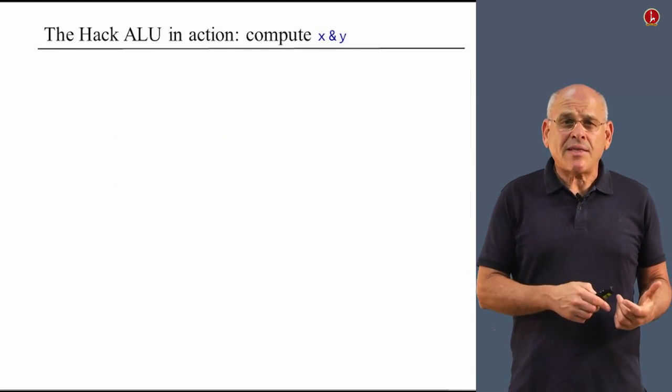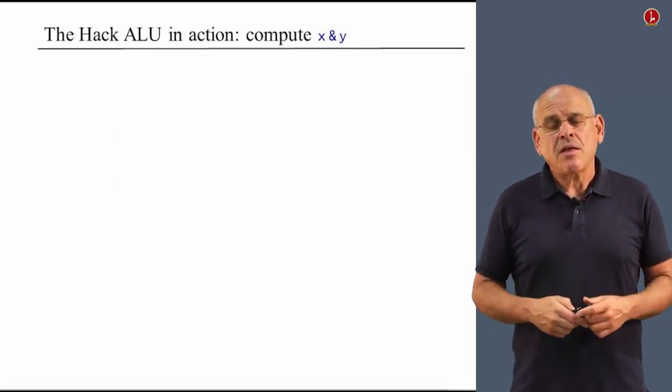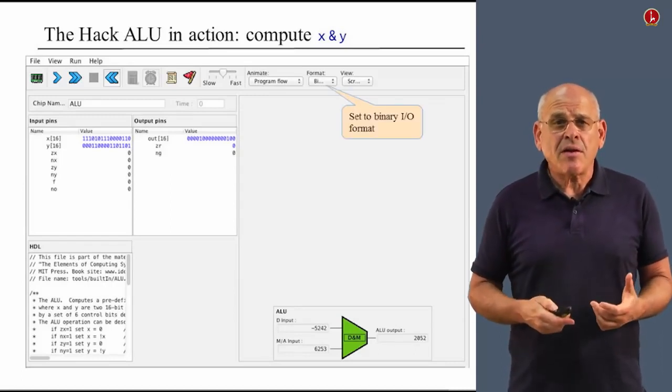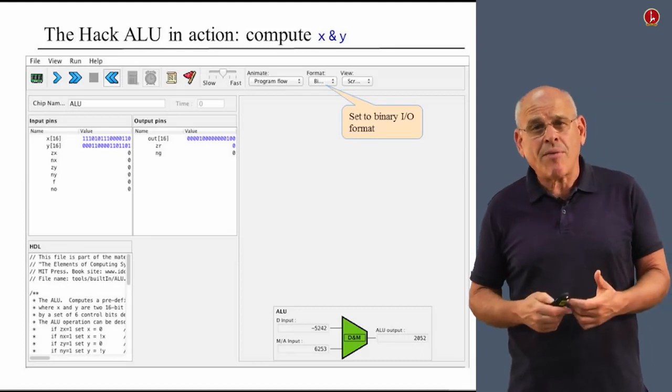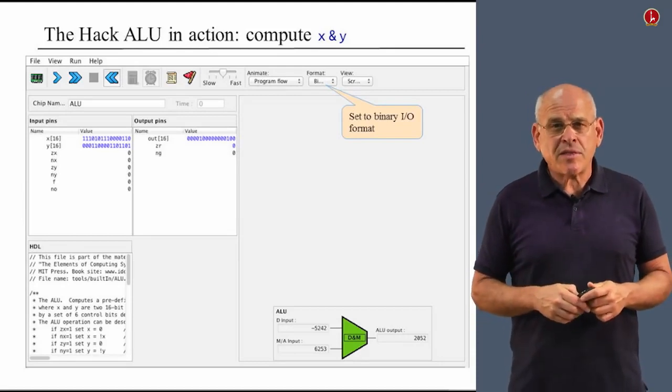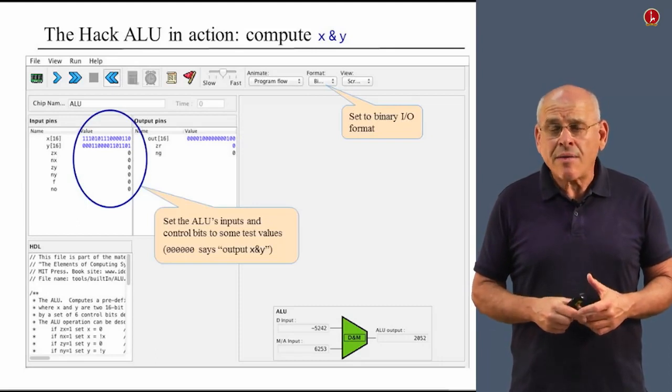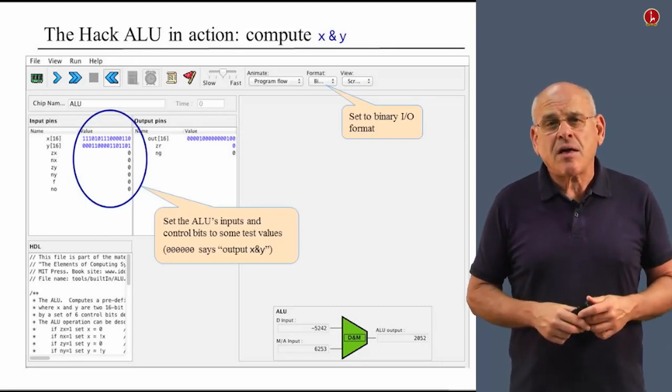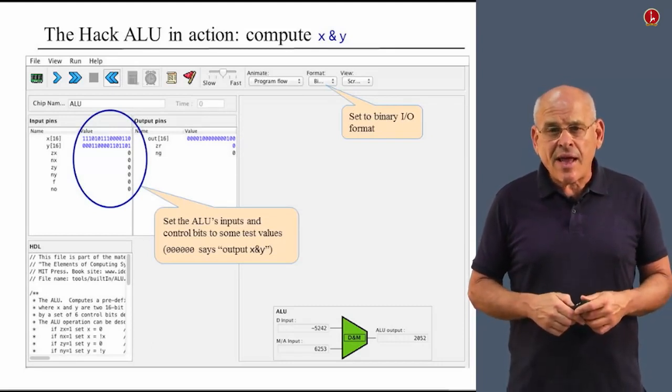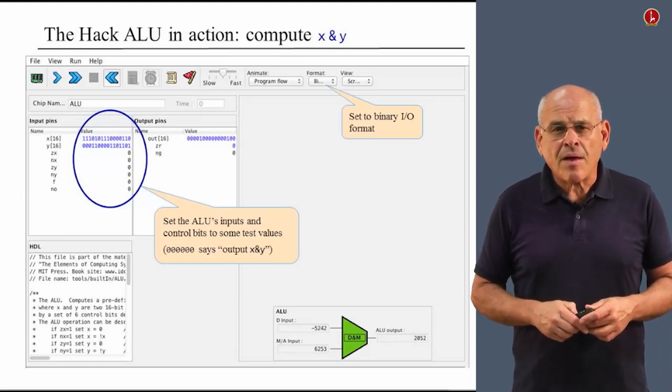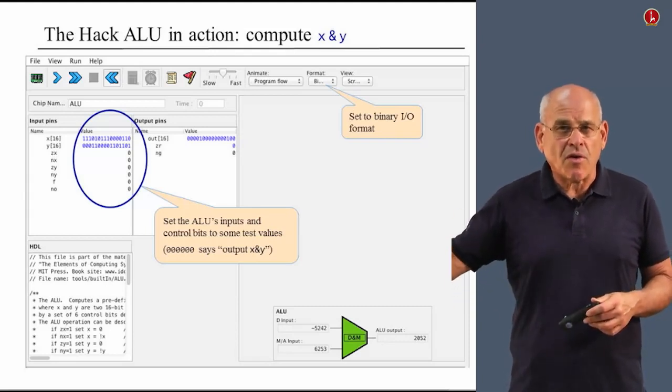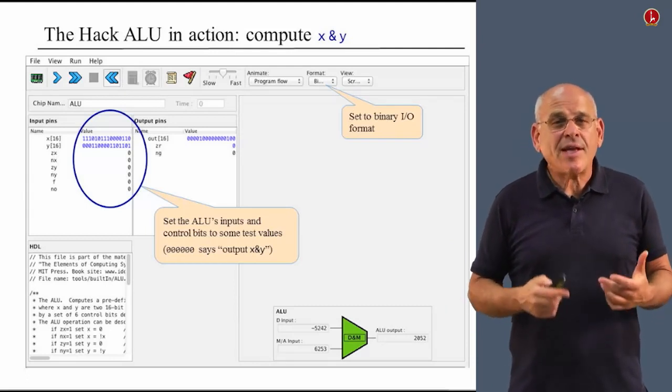Let me give you a second example, which demonstrates the logical computational capabilities of the ALU. The first thing that I do is I tell the simulator to revert to working with boolean formats rather than decimal formats, which make it much easier to enter zeros and ones into the various inputs of the ALU. And that's what we do here. So I picked up two arbitrary examples of 16-bit zeros and ones values. I entered them, and then I entered also the control bit values 0, 0, 0, 0, 0, 0.